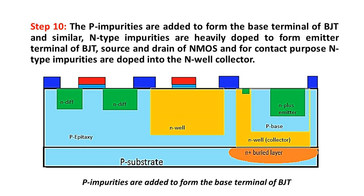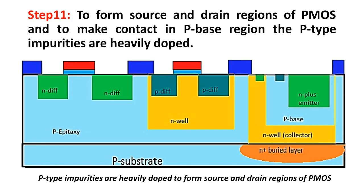Step 10: The P-impurities are added to form the base terminal of BJT, and similarly, N-type impurities are heavily doped to form the emitter terminal of BJT, source and drain of NMOS, and for contact purpose, N-type impurities are doped into the N-well collector. Step 11: To form source and drain regions of PMOS and to make contact in the P-base region, the P-type impurities are heavily doped.